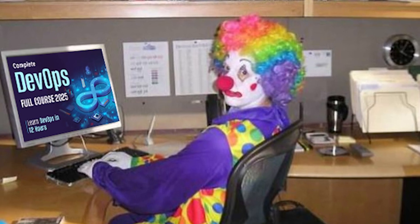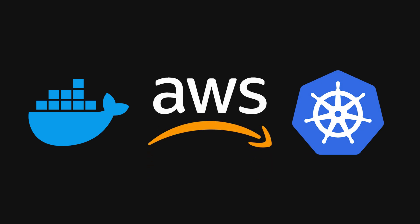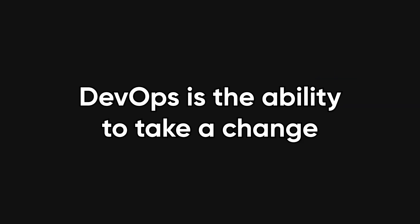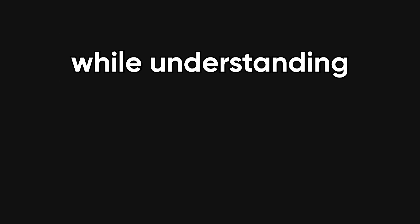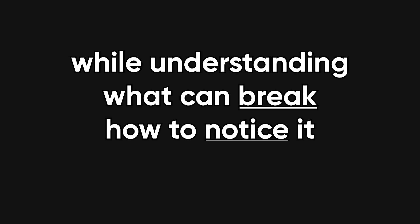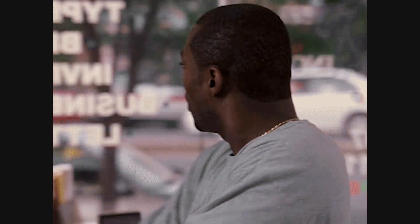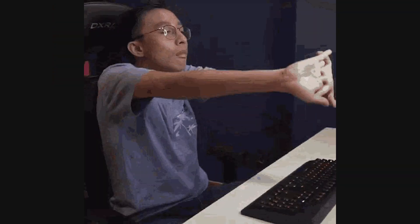The biggest mistake people still make when trying to learn DevOps is thinking it's a checklist of tools instead of a way of thinking about how software actually lives in the real world. DevOps is not Docker plus Kubernetes plus some cloud provider logos on your resume. DevOps is the ability to take any change and reliably move it from a developer's laptop into production while understanding what can break, how you'll notice it, and how you'll recover when it does. Once you internalize that, everything else starts to make sense because DevOps stops being abstract and starts being very practical.